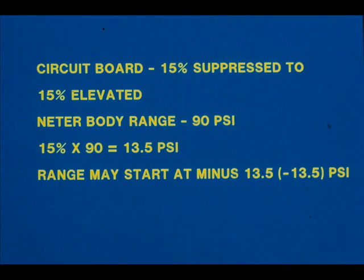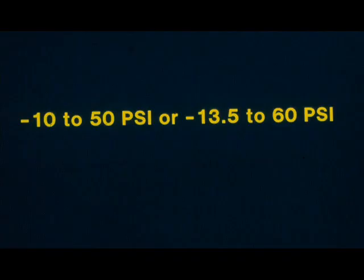The 15% elevated means that the range may be adjusted below 0 PSI to approximately 15% of the upper range limit. Therefore, it would be possible to calibrate our 90 PSI meter body and circuit board combination to a range such as minus 10 to 50 PSI or minus 13.5 to 60 PSI.